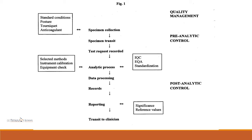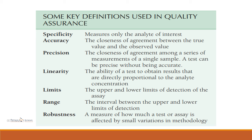Later on, the significance of the report and the reference values are given and the report is handed over to the clinician. To understand quality control, we should understand these definitions first. The specificity of a test means it measures only the analyte of interest. The test is said to be accurate if there is closeness of agreement between the true value and the observed value — in simple words, how correct a result the test is giving.